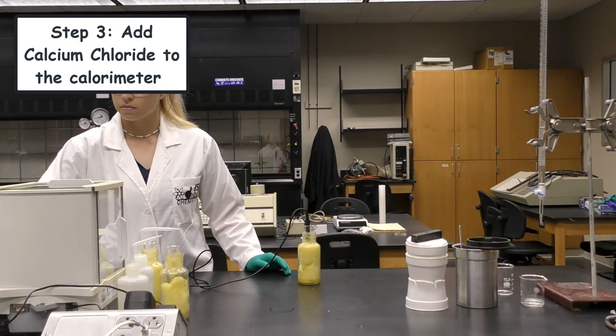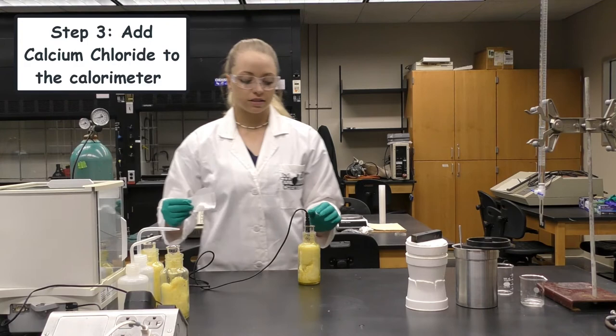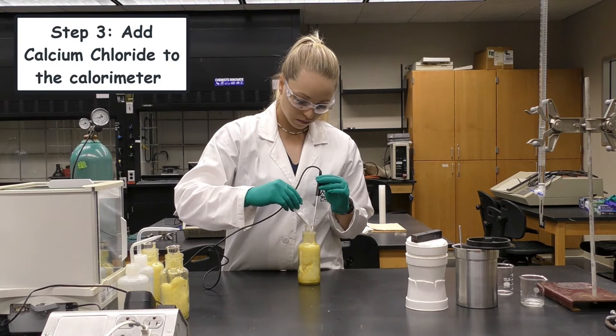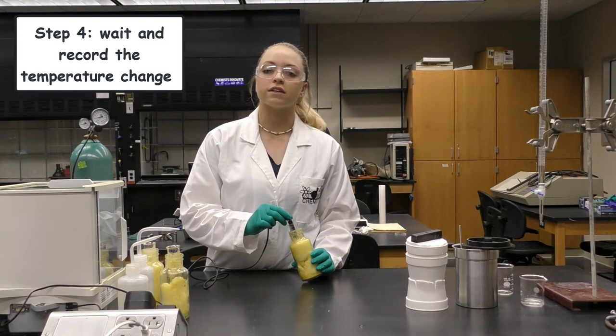Now that we have our initial temperature, we can add our calcium chloride. We will be adding 3 grams of calcium chloride to our calorimeter.